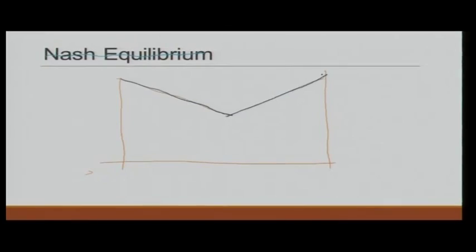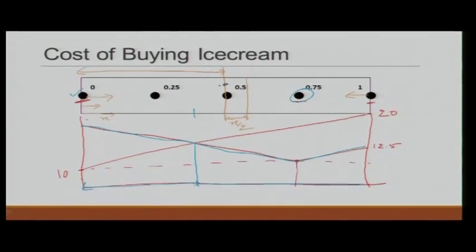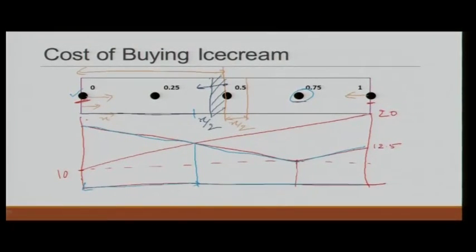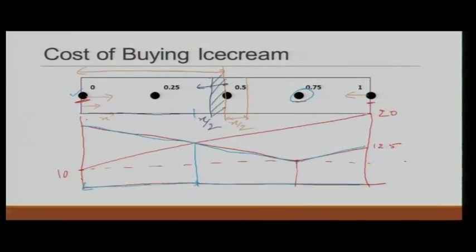None of the players have any incentive to change the location of their cart at this Nash equilibrium. If a vendor moves away from the center — say in the x direction — he can capture all consumers on one side but only up to x/2 distance on the other side, so he loses market share overall. He does not have any incentive to move. The only Nash equilibrium is both vendors parking right in the middle.